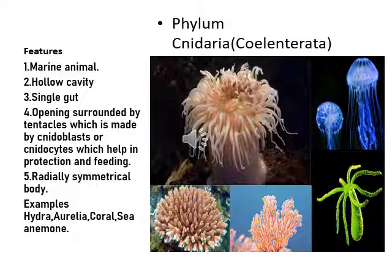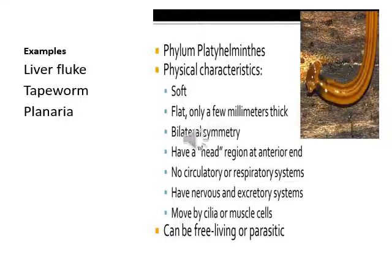Phylum Platyhelminthes includes the flatworms. They are soft, flat, and only a few millimeters thick. Their body has bilateral symmetry, meaning they are the same on the left and right sides. They have a head region at the anterior end. They do not have a circulatory or respiratory system, but they have a nervous and excretory system. They have a single gut that acts as both mouth and anus.